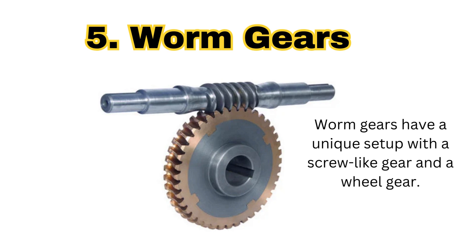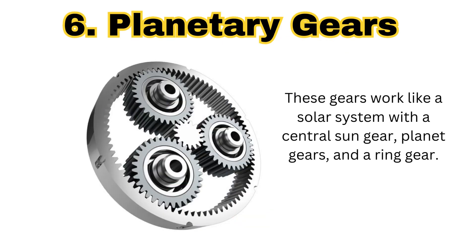The next gear is the worm gear. The worm gear has a unique setup with a screw-like gear and a wheel gear. You will find this type of gear where you need high reduction ratios. Applications include elevators and conveyor systems. Worm gears are essential for precise control.